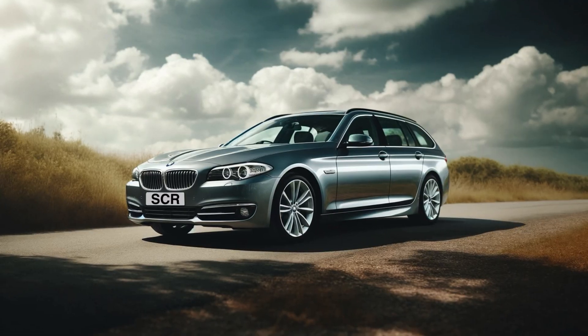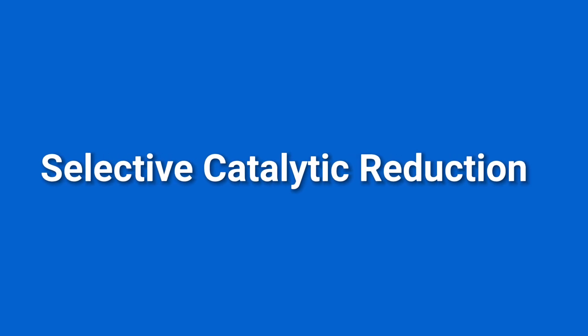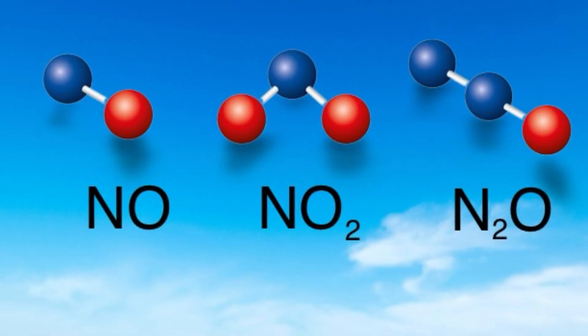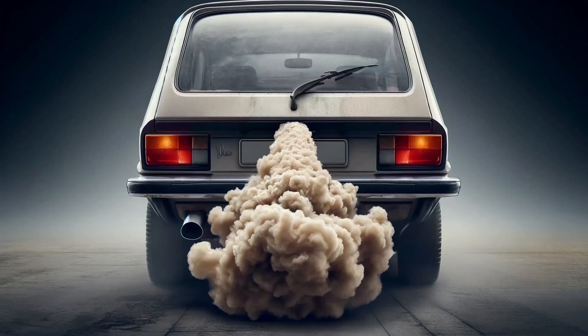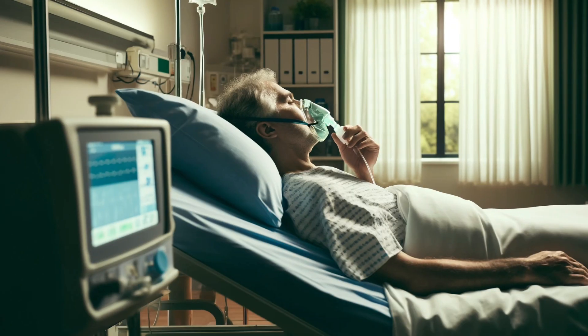Let's take a look at how an SCR system functions, using the example of a BMW F11 with the N47 engine. SCR stands for Selective Catalytic Reduction, and its function is to reduce NOx particles to as close to zero as possible. NOx is short for nitrogen oxides — harmful particles produced during combustion, contributing to smog and adverse environmental and health effects.